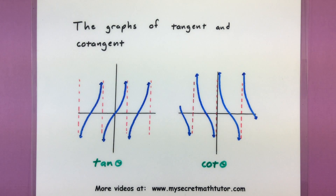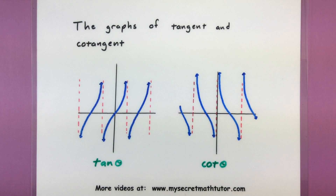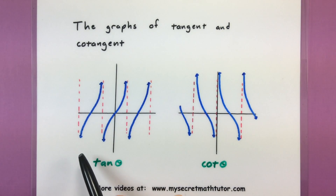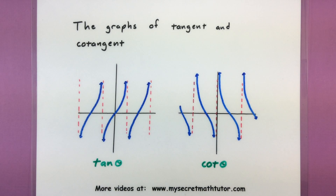Hello and welcome to MySecretMathTutor. For this video we're going to work on graphing tangent and cotangent. These two are very interesting trigonometric functions and when you look at them they don't quite look like your normal sine and cosine functions — because of course they're not, they are tangent and cotangent. The key for really graphing these is recognizing the sine and cosine that work in the background. It's usually a good idea to start with the asymptotes and then find some key values around those.